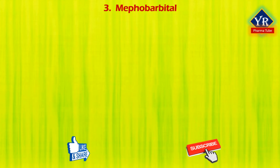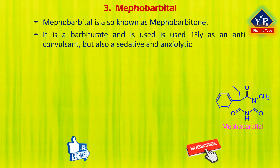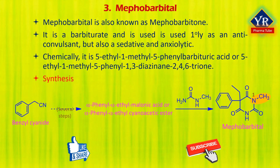The third drug is mephobarbital, also known as mephobarbitone. It is a barbiturate derivative used primarily as an anticonvulsant but also as a sedative and anxiolytic. It is chemically 5-ethyl-1-methyl-5-phenyl-barbituric acid or 5-ethyl-1-methyl-5-phenyl-1,3-diazinane-2,4,6-trione. It is an N-methylated analog of phenobarbital with similar indications, therapeutic value, and tolerability. Mephobarbital is synthesized similarly to phenobarbital but in the last step, methyl urea is used instead of urea.